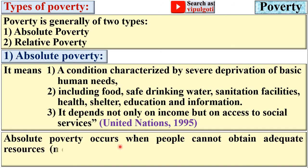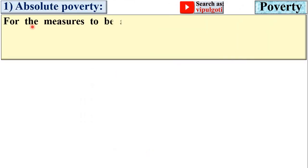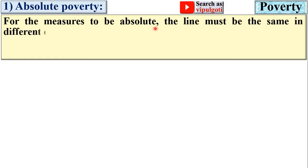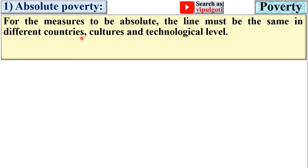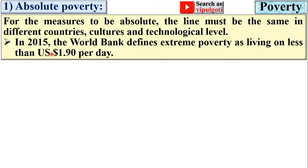Absolute poverty occurs when people cannot obtain adequate resources — that means enough resources, measured in terms of calories — to support a minimum level of physical health. For measures to be absolute, the line must be the same in different countries, cultures and technological levels. In 2015, the World Bank defined extreme poverty as living on less than $1.90 US dollar per day.